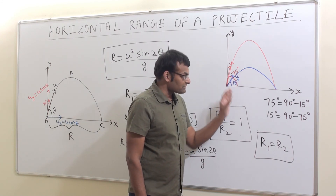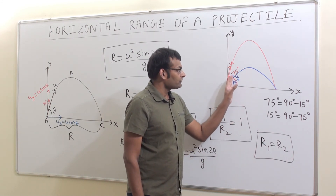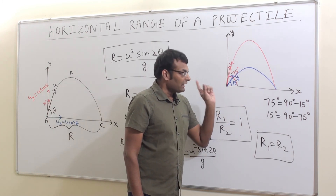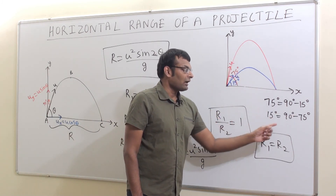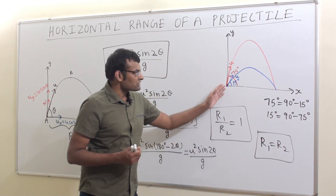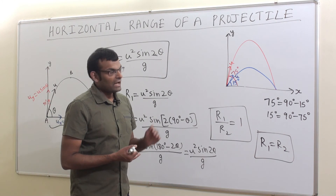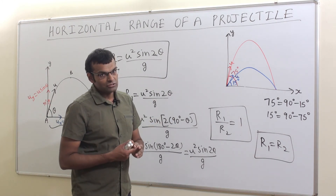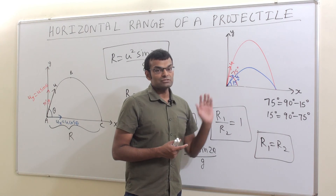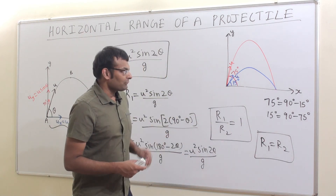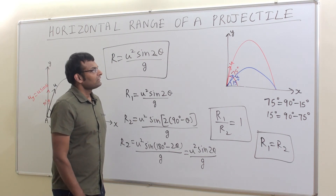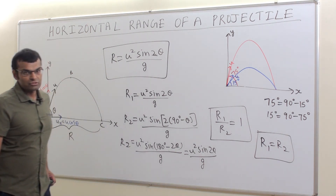The range of both projectiles is the same when thrown at complementary angles. For example, projecting a ball at 30° and 60° with the same velocity will give the same range. Now let us discuss some special cases related to time of flight, maximum height, and range of a projectile.